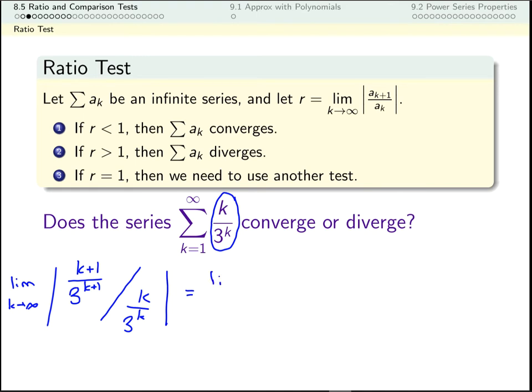Now these are all positive terms, so I don't have to worry too much about that absolute value. Now a nice trick in simplifying this is to match up the terms that came from the same place. So this k here gave me this k and also this k plus 1. So I'm going to match up those terms. Then this 3 to the power k here, that gave me a 3 to the k here and a 3 to the k plus 1 here, so I'm going to match up those terms as well. The 3 to the k is in the denominator of the denominator, so when we flip it to multiply, it comes up here to the top.